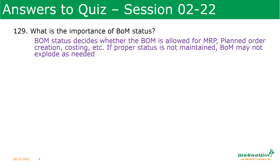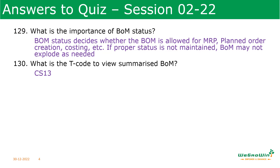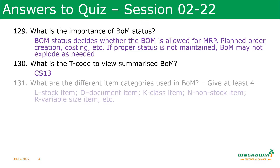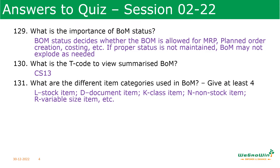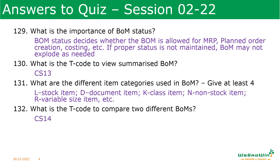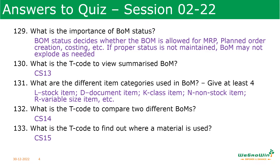What is the importance of BOM status? BOM status decides whether the BOM is allowed for MRP, plant order creation, costing, and many other actions. If proper status is not maintained, the BOM may not be exploded or will not be open as per our requirement. The t-code to view summarized BOM is CS13. Item categories used in BOM include L (stock item), D (document item), K (class item), N (non-stock or variable size item), and many others. The t-code to compare two different BOMs is CS14, and to find where a material is used in which BOM the t-code is CS15.